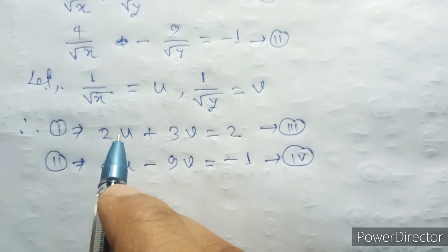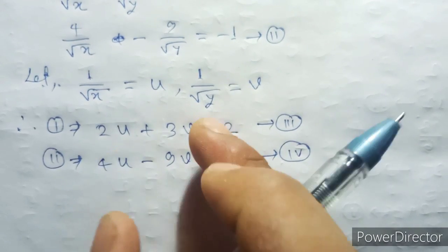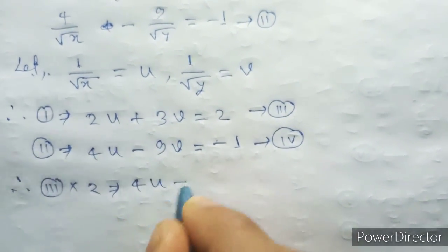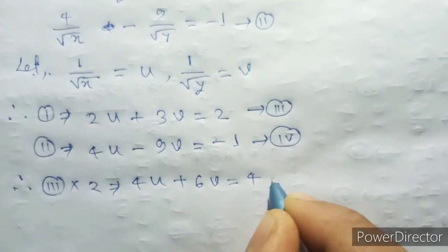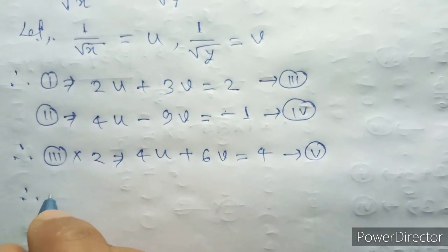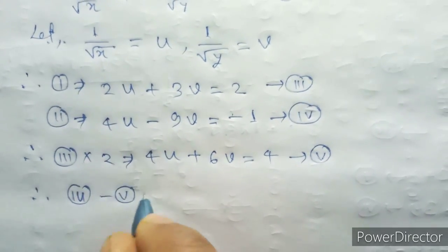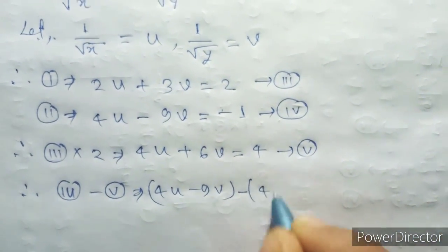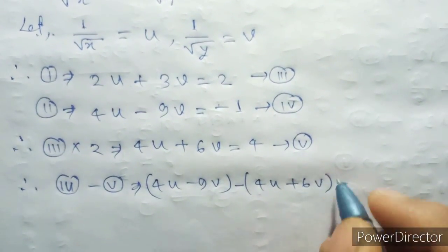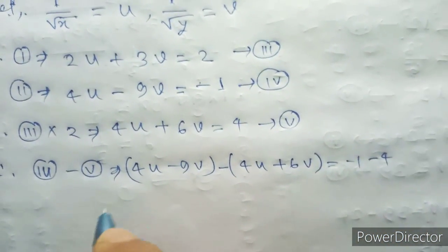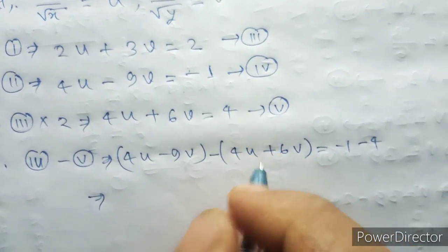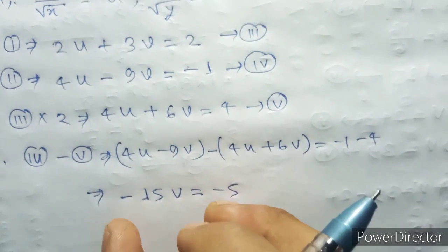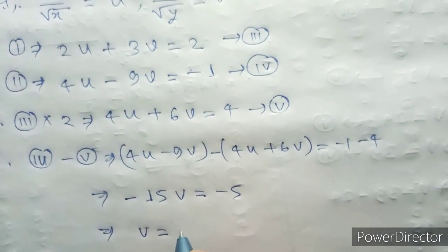I'll multiply equation 3 by 2, so 4U plus 6V equal to 4, equation number 5. Equation 4 minus 5 implies 4U minus 9V minus 4U plus 6V. 4U cancels, so minus 9V minus 6V, that's minus 15V equal to minus 5. So V equal to 5 by 15, which equals 1 by 3.